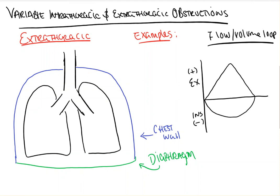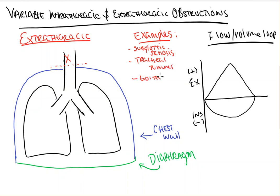We're going to start with our variable extra-thoracic obstructions. These are going to be lesions in the airway before it enters the thoracic cavity. Some examples include subglottic stenosis, tracheal tumors, goiters — because they'll press down by their mass effect — and vocal cord paralysis.